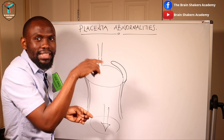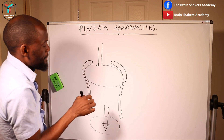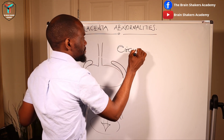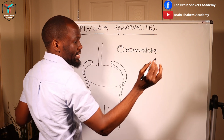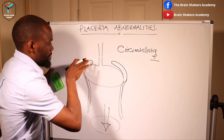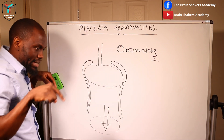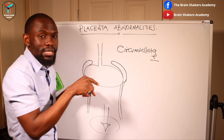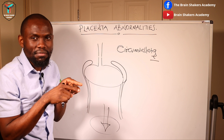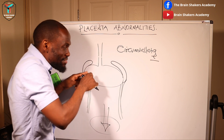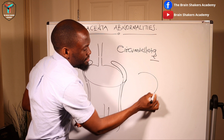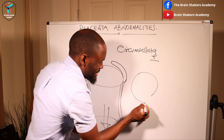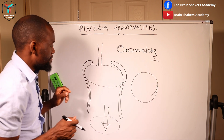When these membranes cover the entire circumference of the fetal surface, this is called a placenta circumvallata. In some literature it is written as circumvallate. There is also a partial circumvallata where the membranes do not cover the entire placenta but only a portion of the fetal surface. Where it covers the entire circumference it is a complete placenta circumvallata.